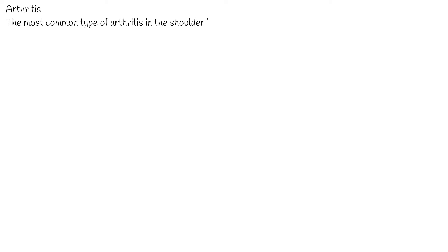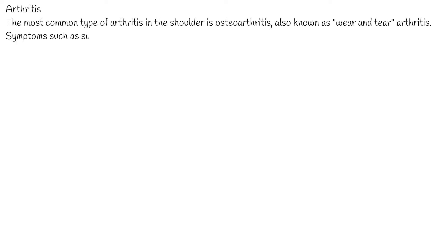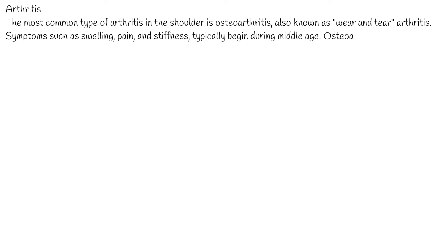Arthritis. Shoulder pain can also result from arthritis. There are many types of arthritis. The most common type in the shoulder is osteoarthritis, also known as wear and tear arthritis. Symptoms such as swelling, pain, and stiffness typically begin during middle age. Osteoarthritis develops slowly and the pain it causes worsens over time.